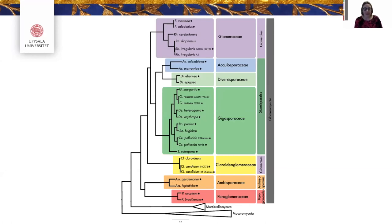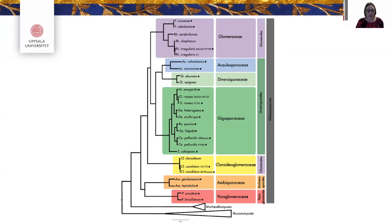We found that, in contrast to work based on ribosomal genes, the order Glomerales is polyphyletic. The Claridoglomerales (shown in purple) come out as a basal sister to the Diversisporales and the rest of Glomerales. In the paper we go into some analysis of conflicts here on gene-tree discordance, but overall the picture is a well-supported phylogeny with broad taxon sampling. The stars indicate new genomes from our work.